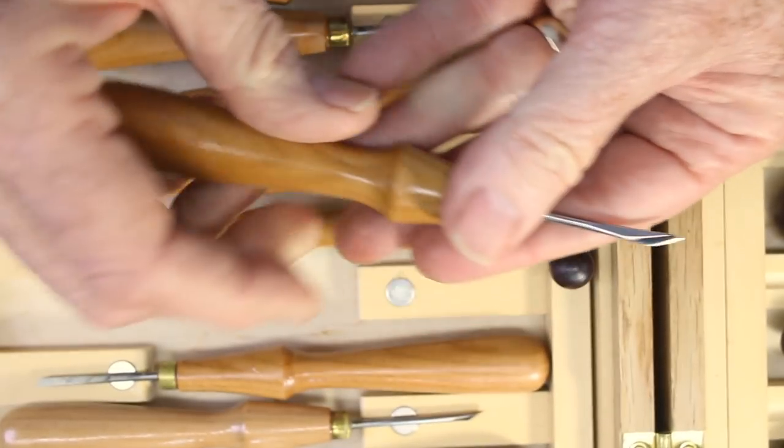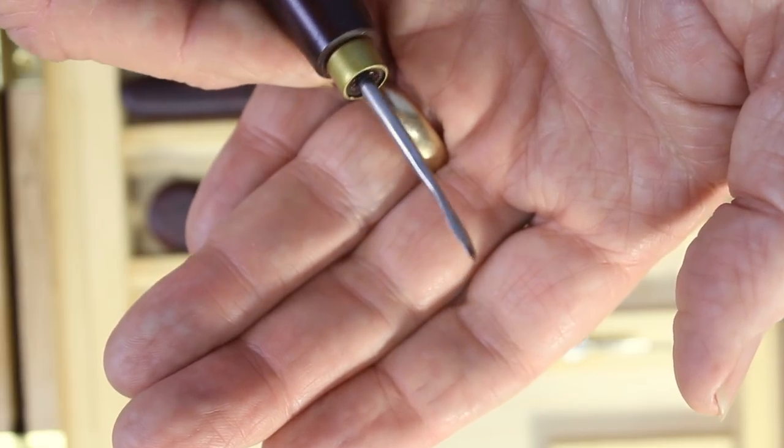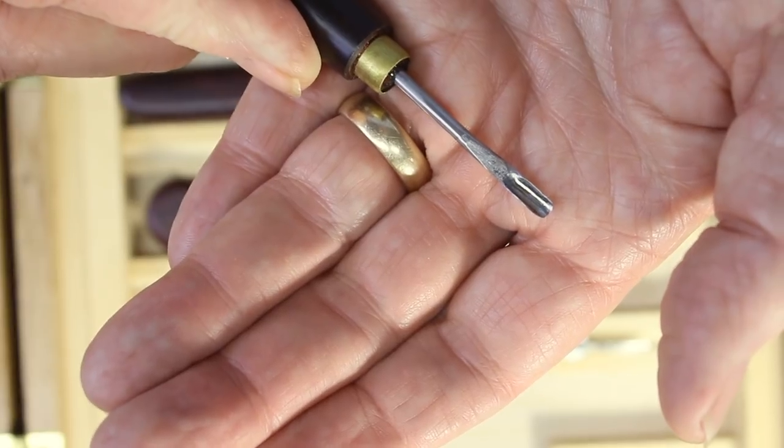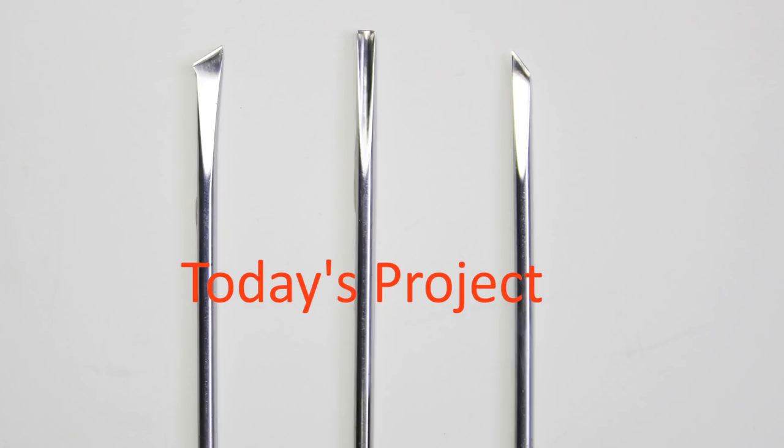We will make some blades of different shapes, and in subsequent videos we'll harden and temper the steel and put on nice handles to turn them into tools you can be proud of. We are going to make these three blades today.